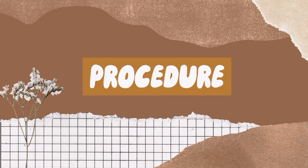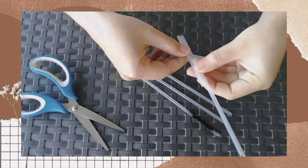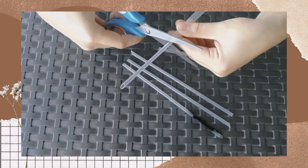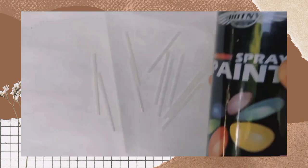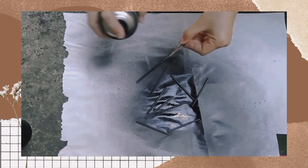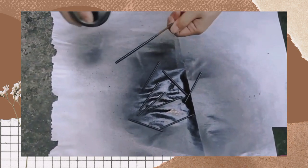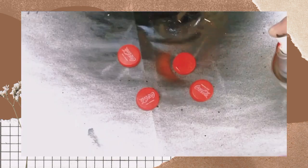For the procedures, our first step is to cut the straws in two. Next, we will spray the straws with black paint, then the caps with red paint.